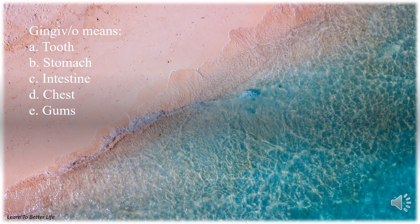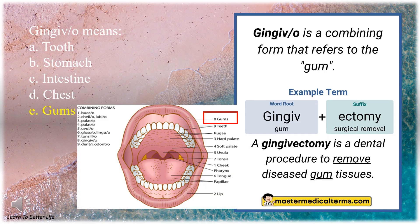Gingivo means. A. Tooth. B. Stomach. C. Intestine. D. Chest. E. Gums. The answer is E. Gums.